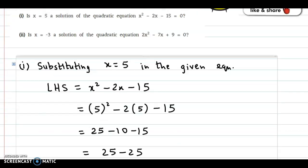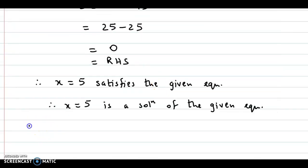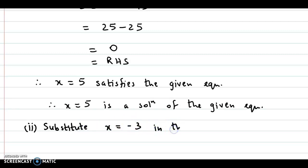We now look at the second sub-question: is x equal to minus 3 a solution of 2x squared minus 7x plus 9 equal to 0? Let us substitute x equal to minus 3 in this equation and see whether it satisfies the equation or not. We substitute x equal to minus 3 in the given equation.